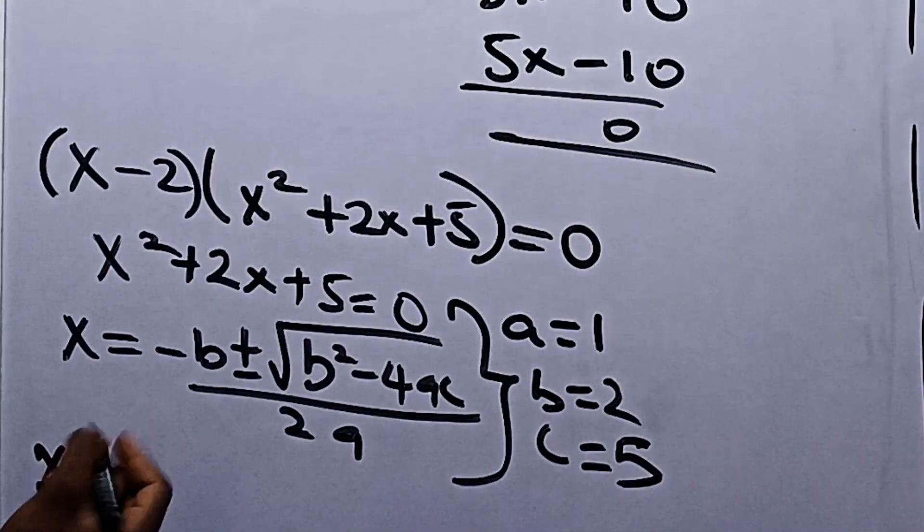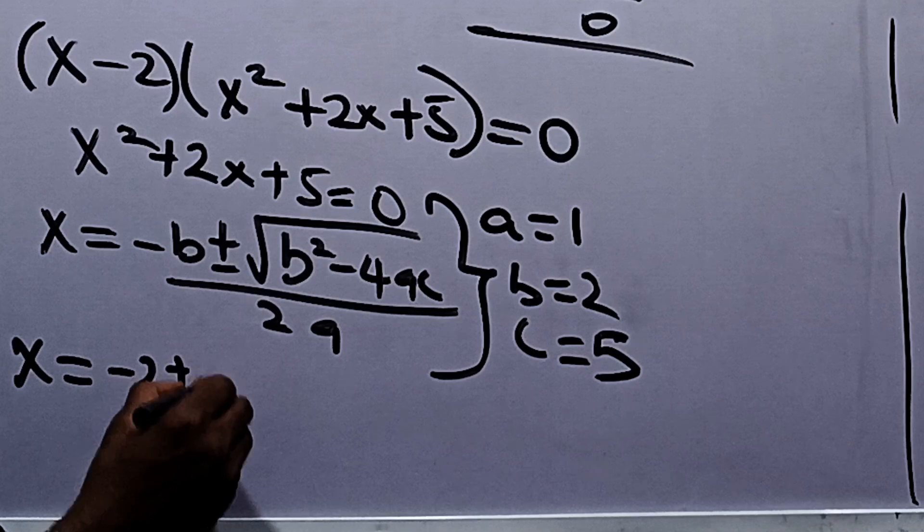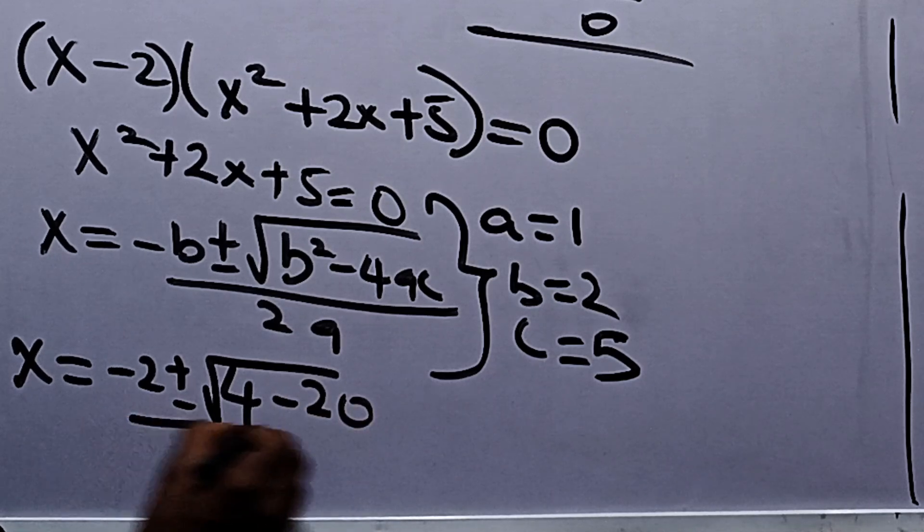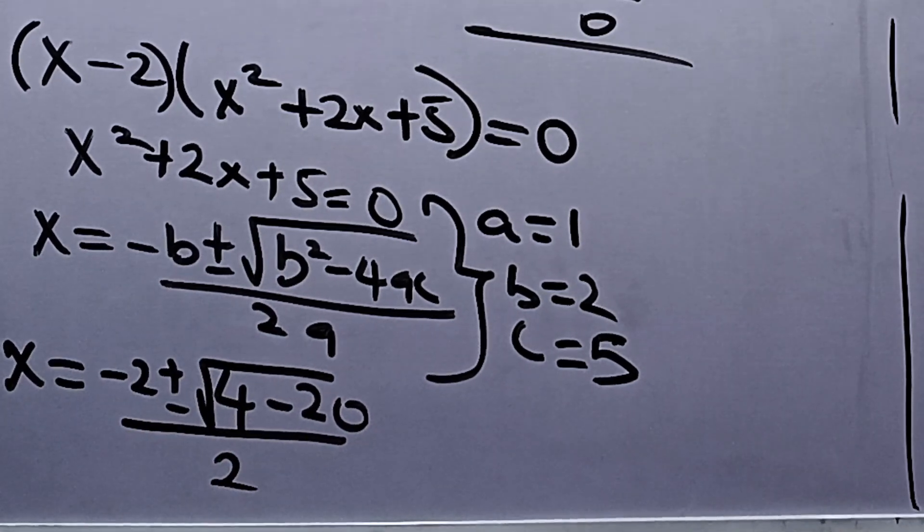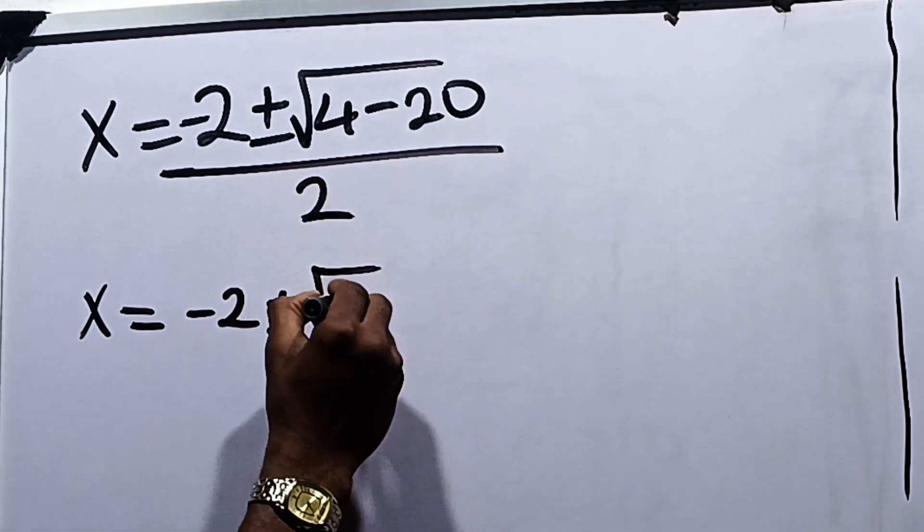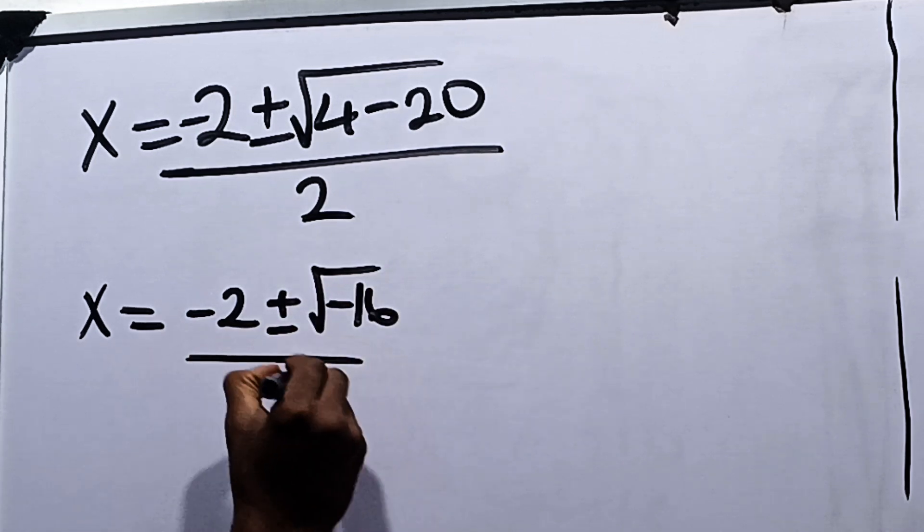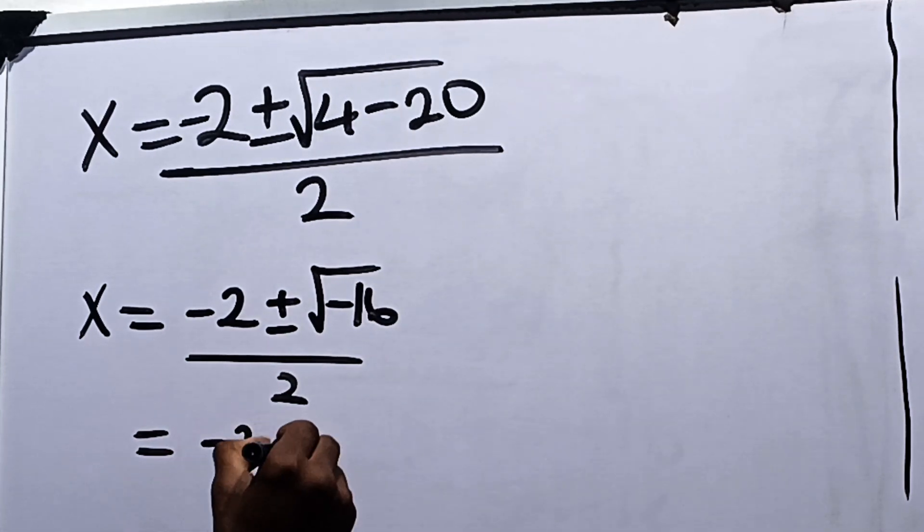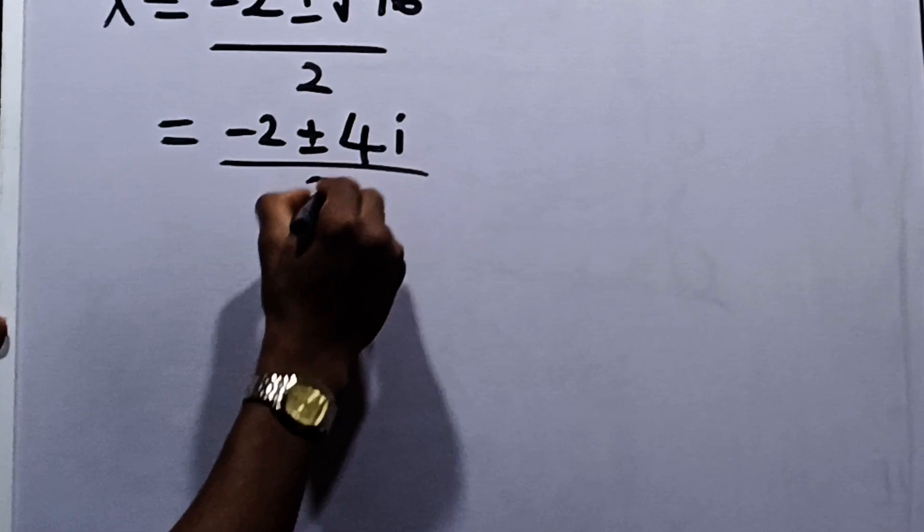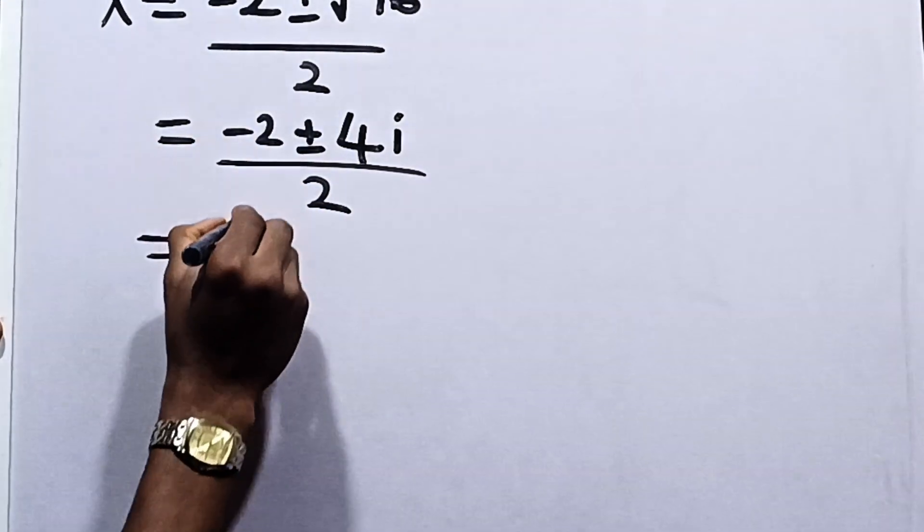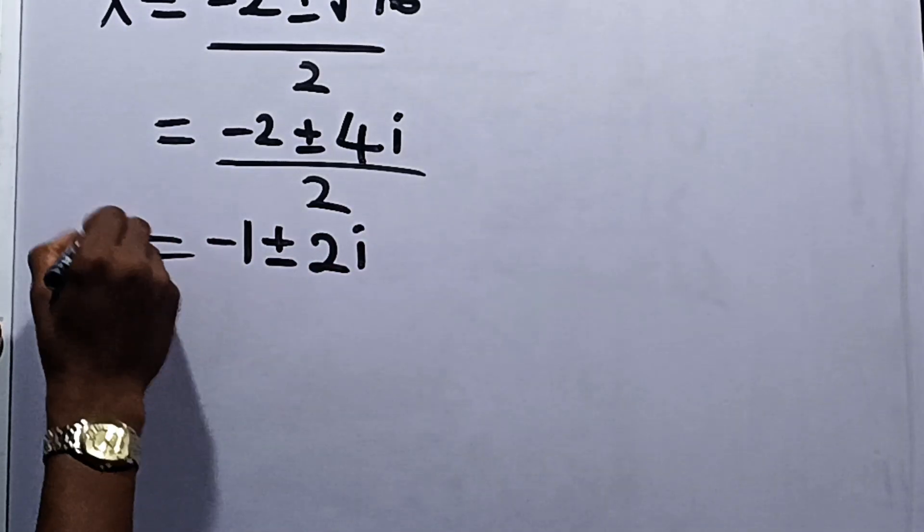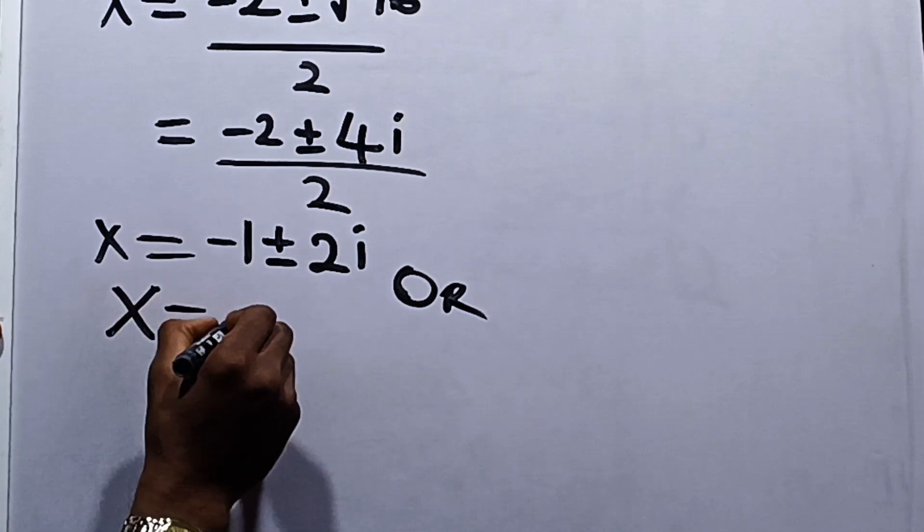So x equals negative 2 plus or minus square root of 4 minus 4 times 5 times 1, which is minus 20, all over 2. This equals negative 2 plus or minus root of negative 16, which is i times root of 16, which is 4i, all over 2. This equals negative 1 plus or minus 2i. So this is our answer for x, or we have that x equals 2.